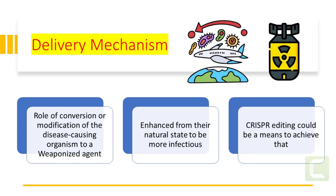In terms of delivery, it is important to understand the role of conversion or modification of the disease-causing organism to a weaponized agent. The agents can be enhanced from their natural state to make them more suitable for mass production, storage, and dissemination as weapons. Almost any disease-causing organism — such as bacteria, viruses, fungi, prions, or rickettsia — or toxin, including poisons derived from animals, plants, or microorganisms, or similar substances produced synthetically, can be used in biological weapons.